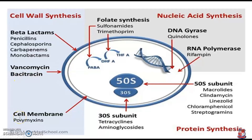Another drug group inhibits the cell membrane. Here you can see: inside is the cell membrane, and the outer blue-colored structure is the cell wall. The cell membrane is inhibited by polymyxin. So these are the three varieties of the class mainly used as cell wall and cell membrane synthesis inhibitors.